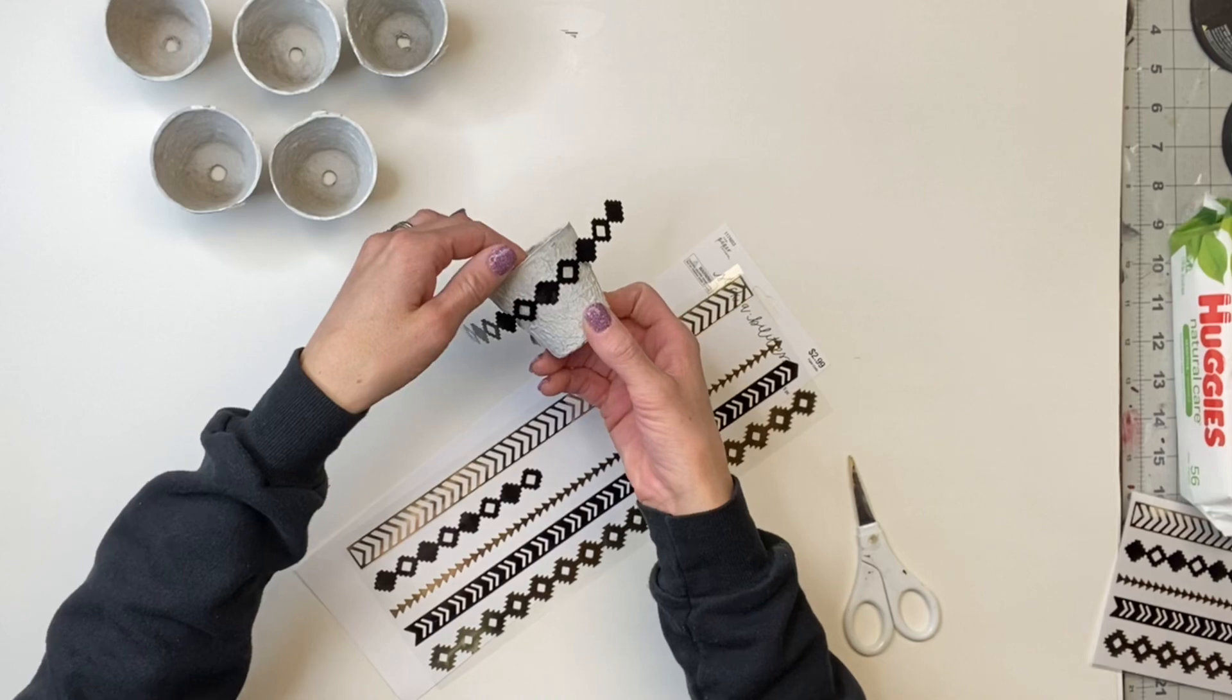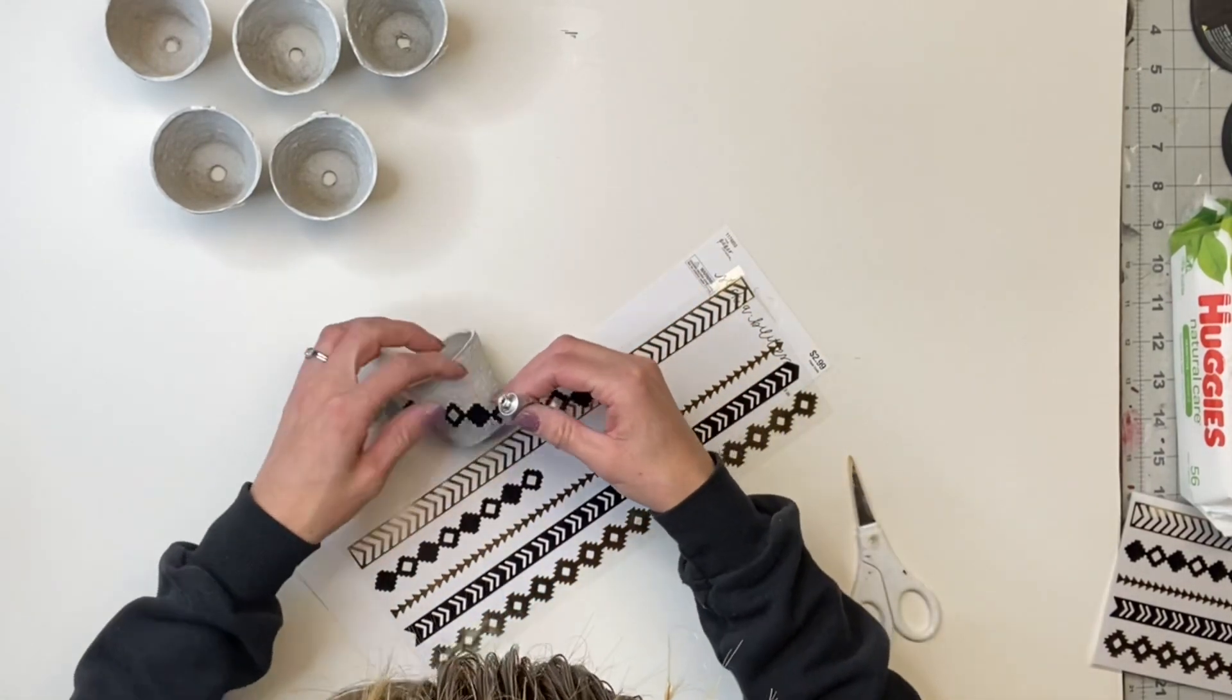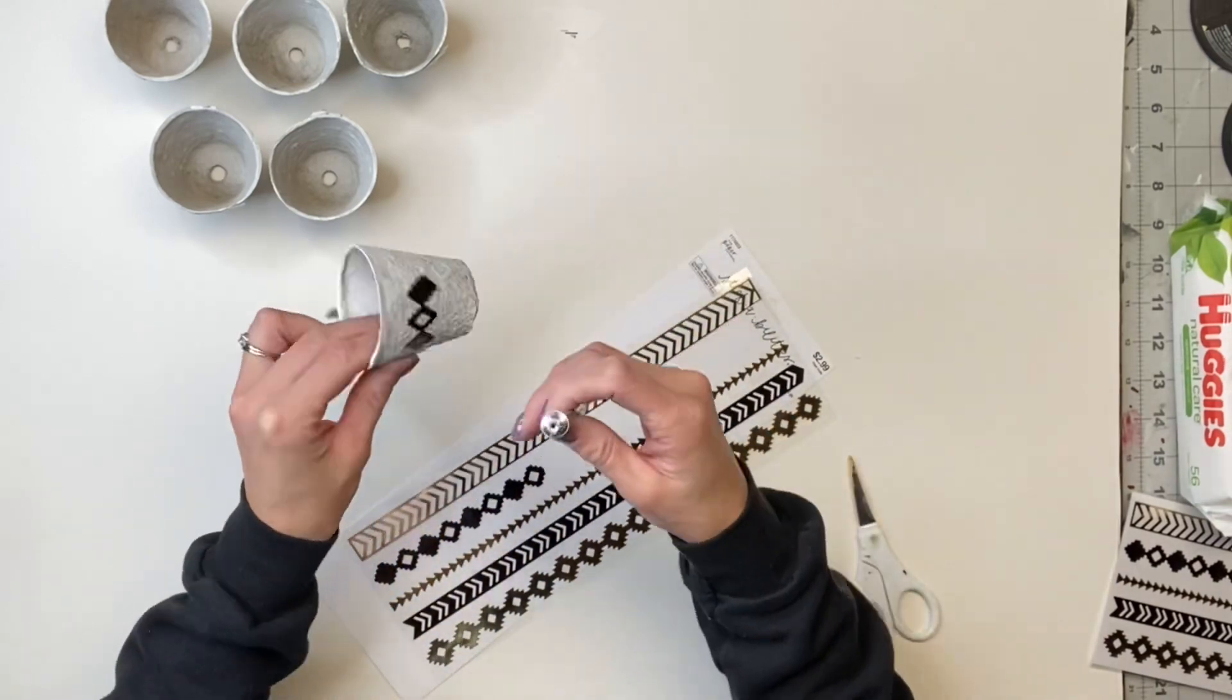So once I measured the length that I needed to have it wrapped fully around, I just cut the sticker, and I'm going to use a little bit of the E6000 to just hold it in place.